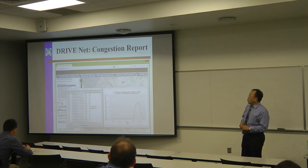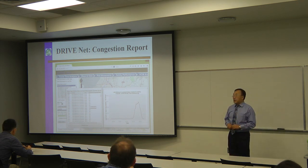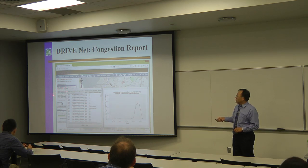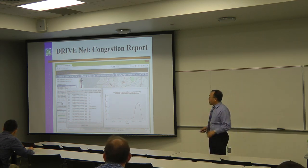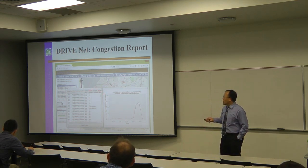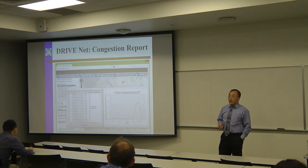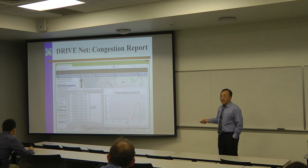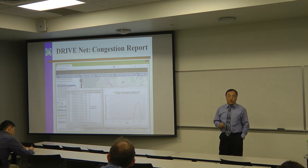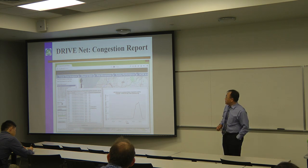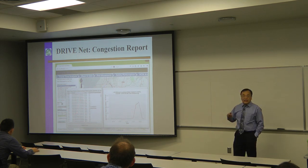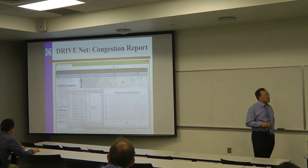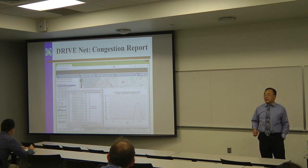Washington State DOT needs to report their performance. They have predefined corridors and also customized corridors they want to select. They used to have research engineers working on this — multiple people working for multiple months to get such charts done. And depending on who looked at the data and how they processed it, results could differ. But with this system, you click the button and it automatically cleans and pulls the data for analysis, done in seconds. The efficiency and consistency are much better.